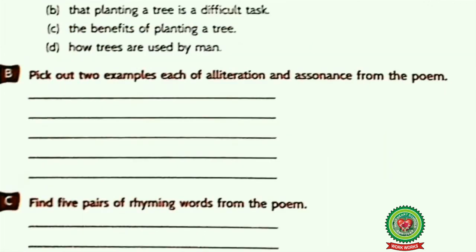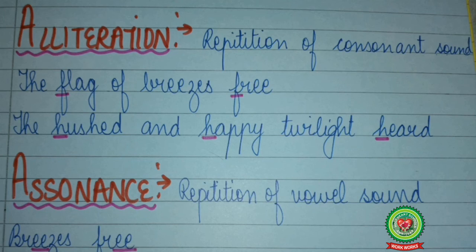Pick out two examples each of alliteration and assonants from the poem. I have already discussed what alliteration and assonants are, and also the two examples of alliteration and assonants used in the poem. So write the answer referring to my previous explanation.